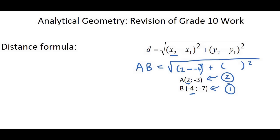Then I fill in my next point. It says I must use the Y value of point 2, so I go to point 2, which is negative 3, then put a minus, and then the Y value of point 1 is minus 7. I take my calculator and type it in exactly like that. If you do this correctly, it should give you 2 square root 13, but to two decimal places, that'll be 7.21.